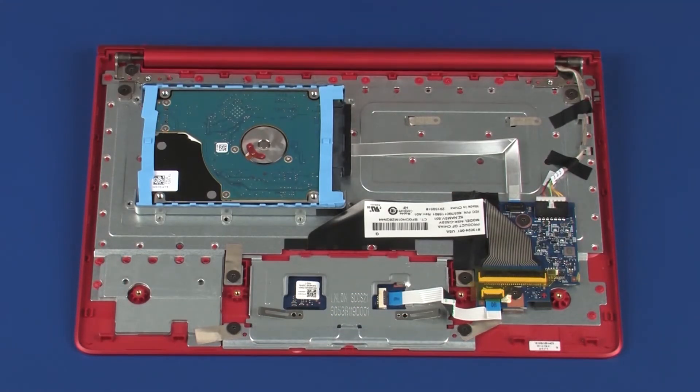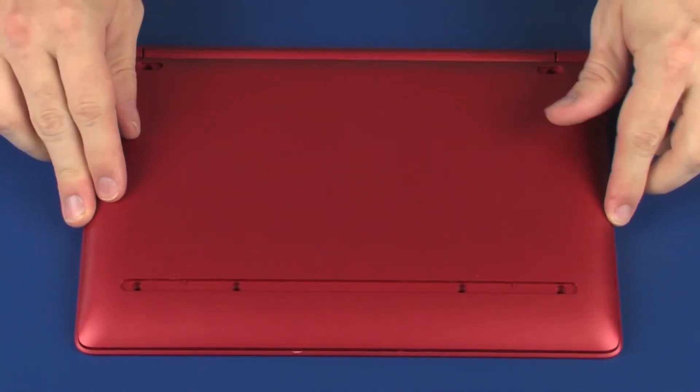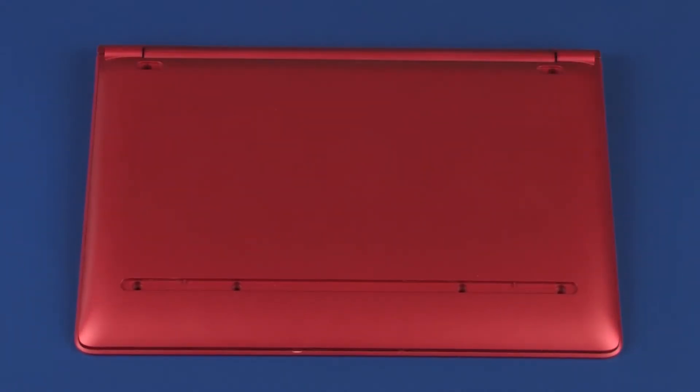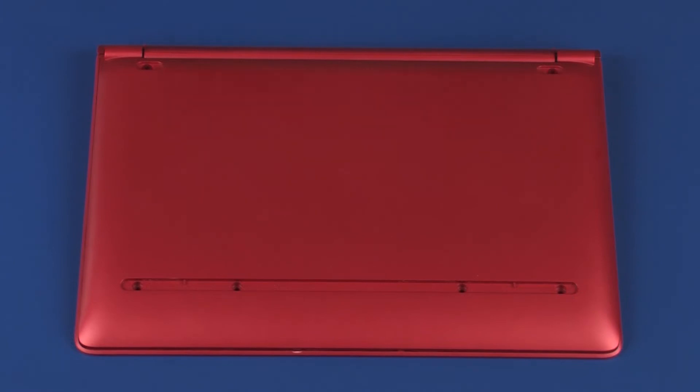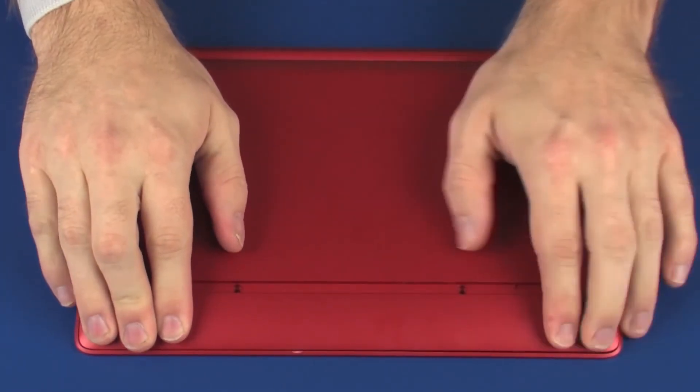Replacement. Place the base enclosure into position on the top cover. Apply pressure to the edges of the base enclosure to snap it into place.